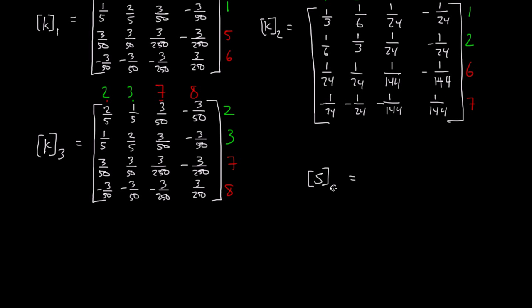The way we do this is since we had 8 degrees of freedom, our S sub C matrix is going to be an 8 by 8 matrix. The rows and columns are going to be labeled in order from 1 through our last degree of freedom, which is 8. On the right side, we're going to write 1, 2, 3 (those are unrestrained), 4, 5, 6, 7, 8.